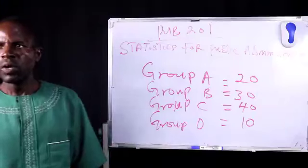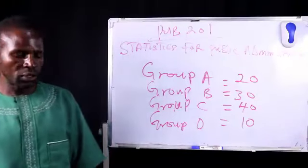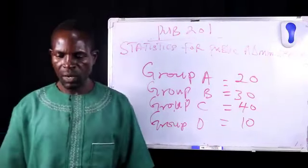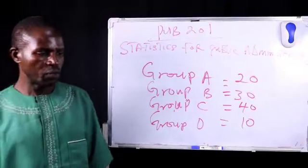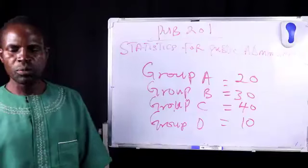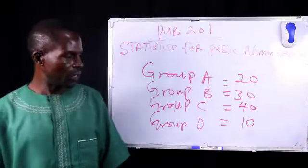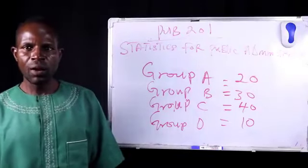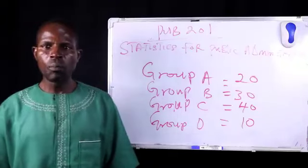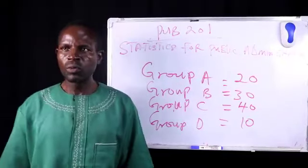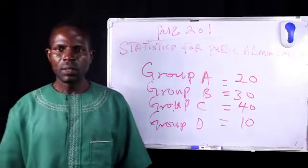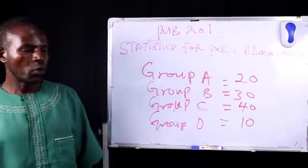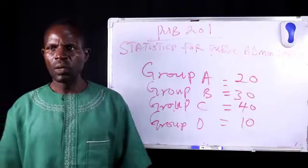We can equally use deductive statistics in arriving at a conclusion. For example, we can generalize on a particular point of view based on the result obtained from the samples. There are different methods that we can use in determining our samples. We can use non-probability techniques and we can equally use probability techniques in determining our samples to be used in the population, as a way of reducing the population to a manageable proportion.